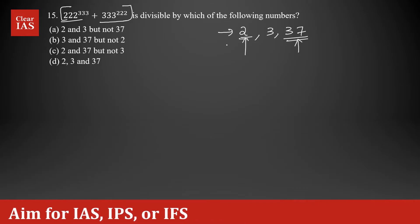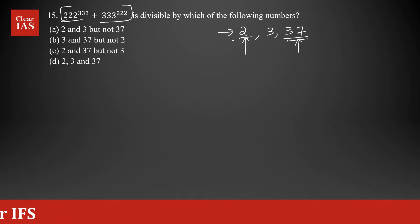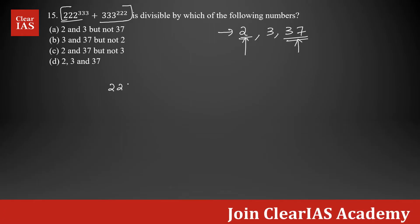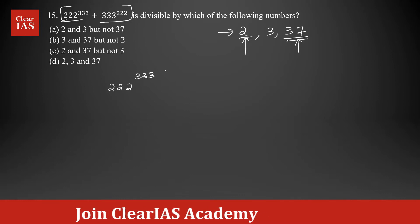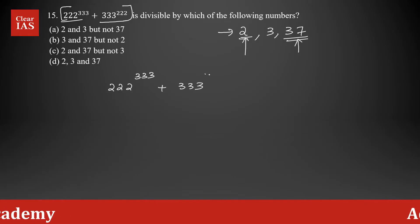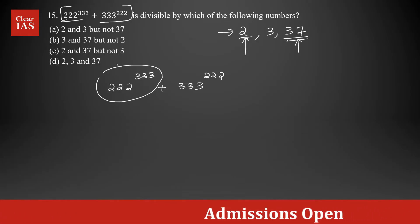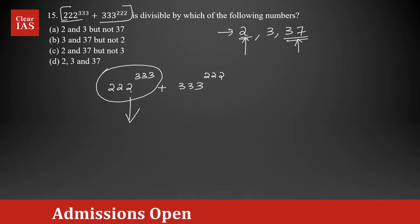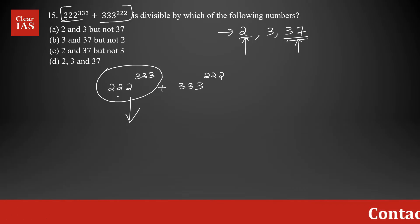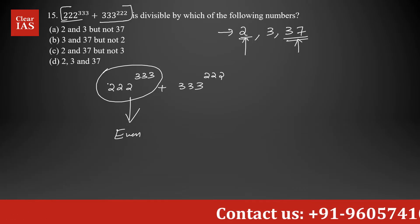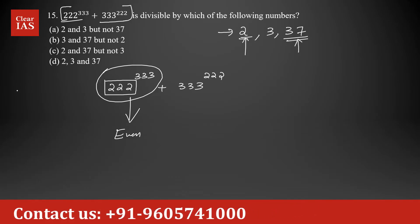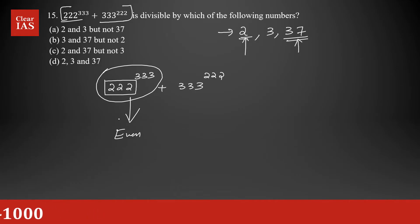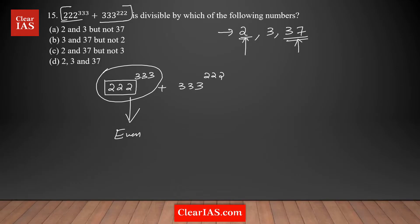To check divisibility by 2, you just need to check whether the number is even or odd. The first term is 222 to the power of 333. Is this even or odd? It's clearly even, because 222 is an even number, and an even number raised to any power is always even — you're multiplying an even number by itself, so the output is always even.